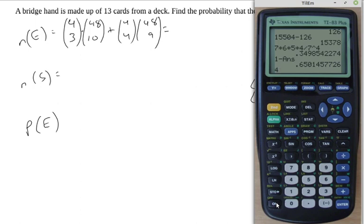Alright, so 4 choose 3 is 4. 48 choose 10, I'll ask the calculator that one. That is some rather large number. Yeah, this is the problem with doing these things as numbers. Plus, 4 choose 4 is 1, so I don't need to do anything there. 48 choose 9 is...